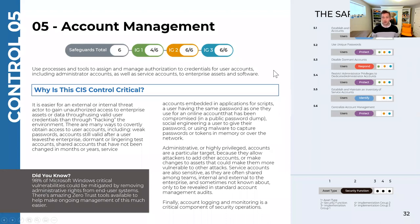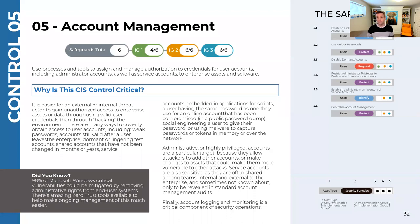5.3 is disabling dormant accounts. This is unfortunately common — someone may go on sick leave or maternity leave and the business says we'll just leave their account because they'll be back in a couple months, and then they never come back. There needs to be a process to identify which accounts are not being used and to disable them so they don't get attacked.